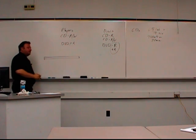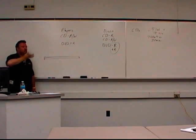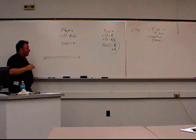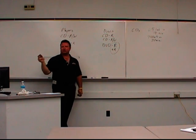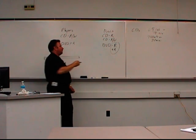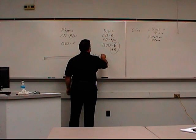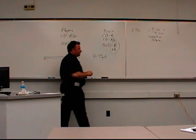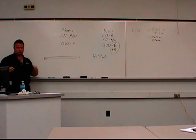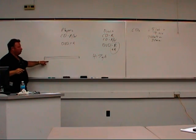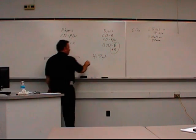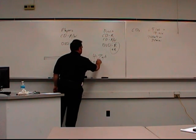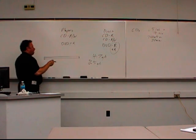But then they came up with a dual layer that stores information in two levels. So on most single layer blank DVDs, anybody know how much information that holds? 4.7 gigabytes is what a standard single layer DVD holds. A dual layer, people expect that to hold 9.4 gigabytes, but that's not true. A dual layer only holds 8.5 gigabytes.